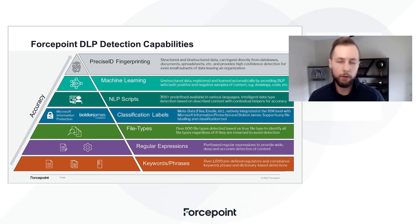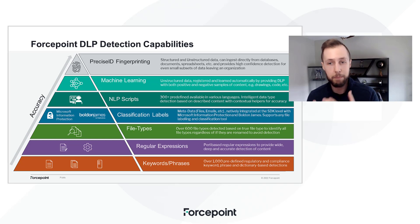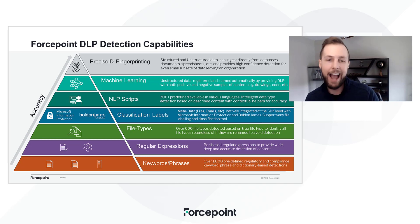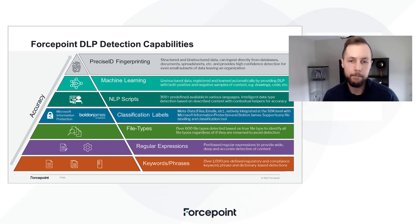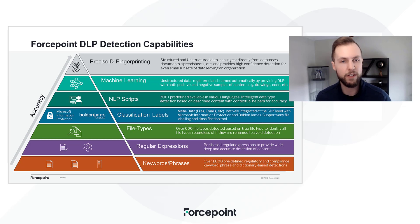Another really cool feature that we have with MIP and Bolden James together is what's called automatic classification. Automatic classification uses our DLP robust inspection methods, as you see on the screen, and then takes files that have either been labeled by a previous solution or never labeled at all, and uses those tagging solutions to apply tags or headers and then apply post-mortem DLP inspection after the fact — moving things from public to confidential and being able to block those in case no sensitive criteria was found within those files.